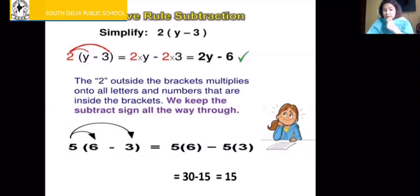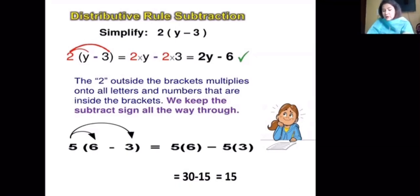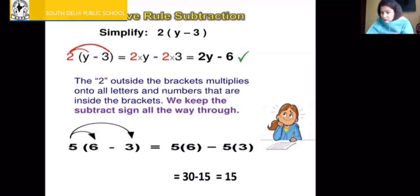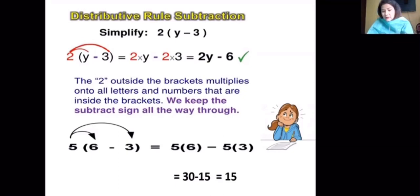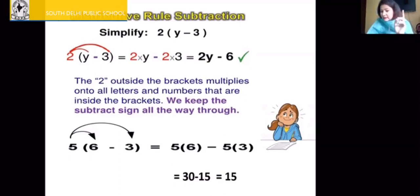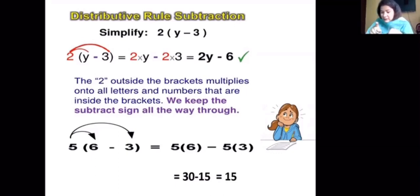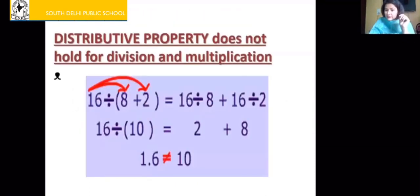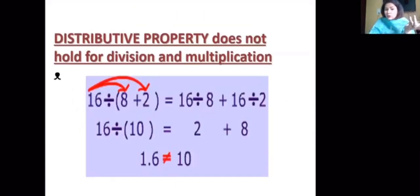Distributive property also holds for subtraction. For example: 5 multiplied by (6 minus 3) — you distribute 5 with both 6 and 3, keeping the sign in the middle. So 5 times 6 is 30, and 5 times 3 is 15. Since there was a minus sign in the bracket, you keep it: 30 minus 15 equals 15. So distributive property holds for subtraction as well.